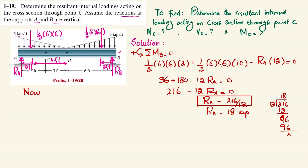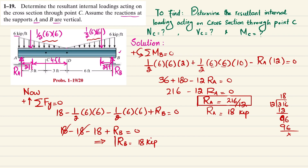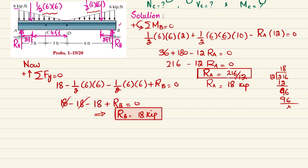Now find RB using the equilibrium condition: sum of all forces along the Y direction equals zero, with upward forces positive. So: RA (18) minus (1/2)(6)(6) minus (1/2)(6)(6) plus RB equals zero. This gives 18 minus 18 minus 18 plus RB equals zero, so RB also equals 18 kips. Now with both RA and RB known, we cut the beam at C.